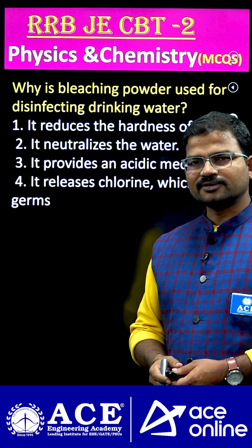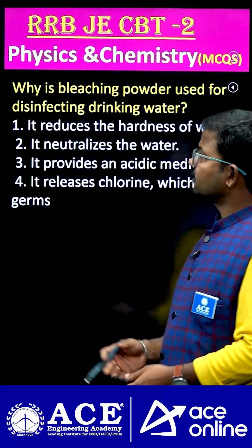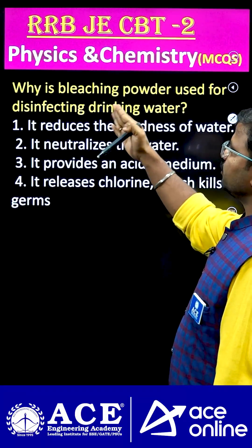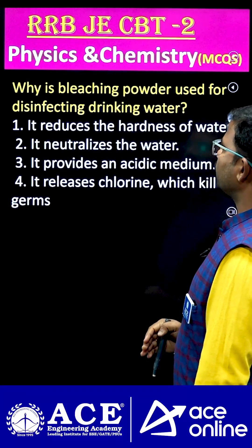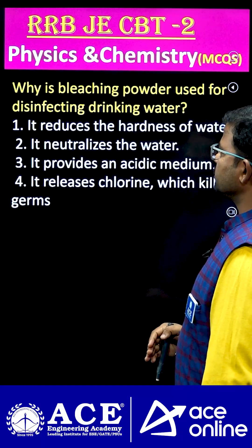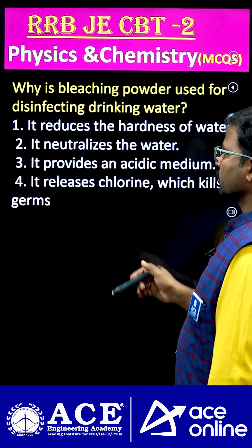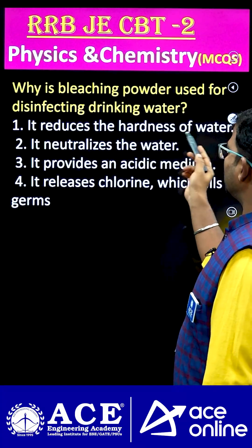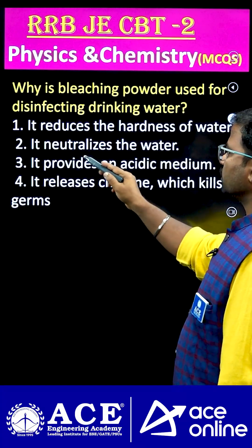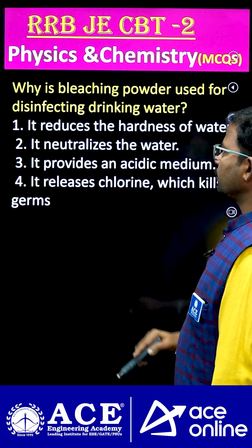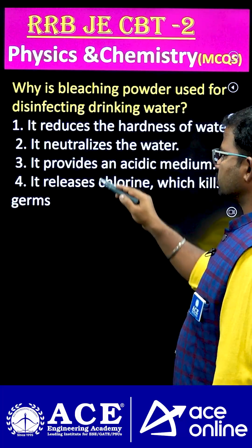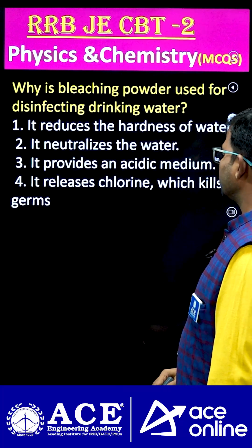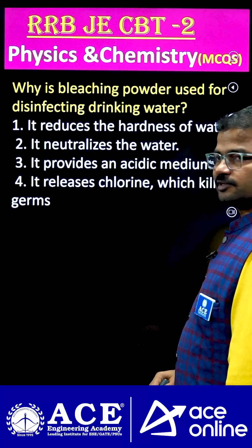Hi students, welcome to ACE online. Look at this important question: Why is bleaching powder used for disinfecting drinking water? The options are: it reduces the hardness of water, it neutralizes the water, it provides an acidic medium, or it releases chlorine which kills germs.